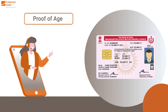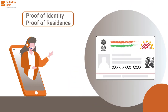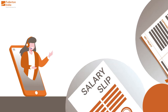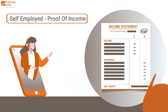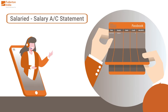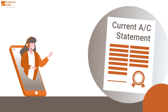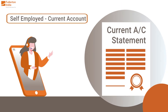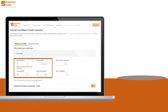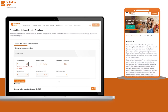Documentation required includes proof of age, proof of identity and proof of residence, last 2 months salary slip for salaried applicants or proof of income and financial statements for the self-employed, last 3 months bank account statements of salary account for salaried or current account statements for the self-employed, and income tax returns or Form 16.